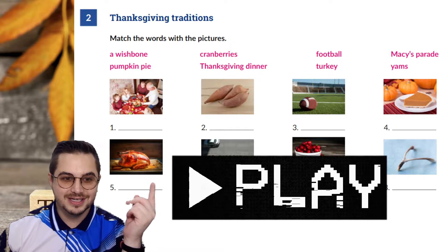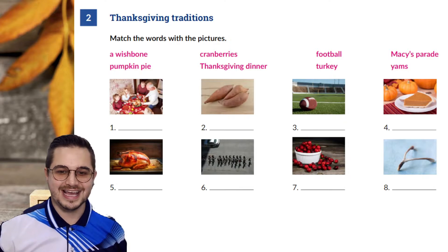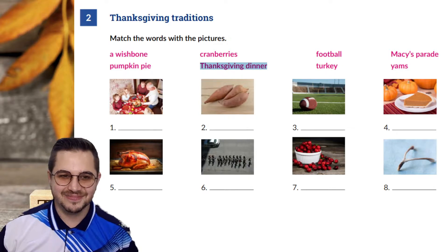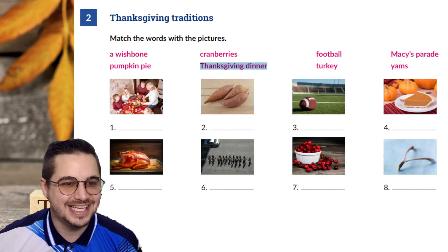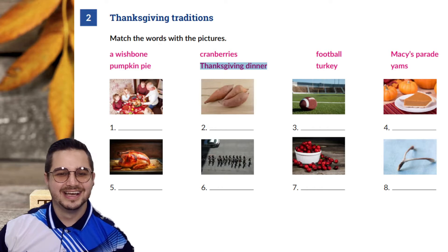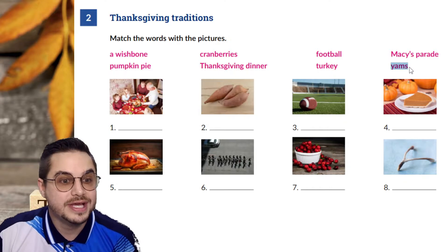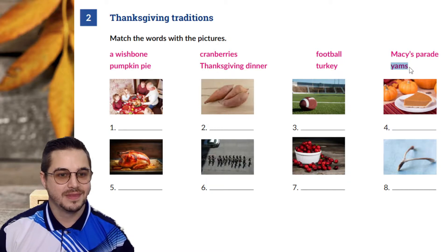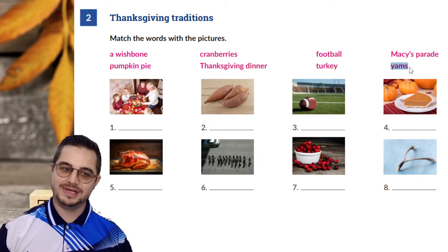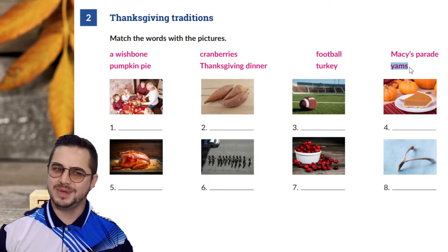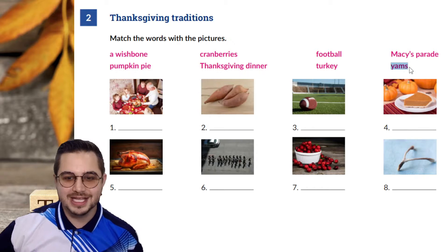Our first one — very easy — is Thanksgiving dinner. Obviously, Thanksgiving dinner is what we eat on Thanksgiving. Number two, these are yams, also called sweet potatoes. Yams are a traditional Thanksgiving food. They're very delicious. You can have them in a pie, baked, even as french fries. You can cook them in many ways.